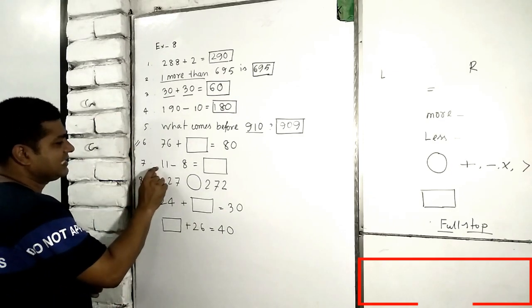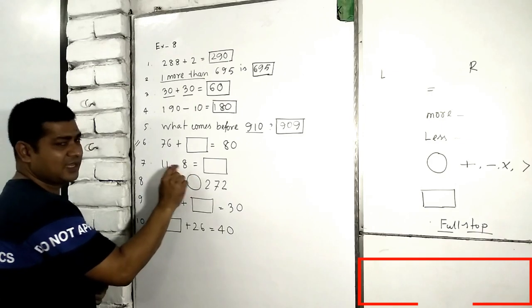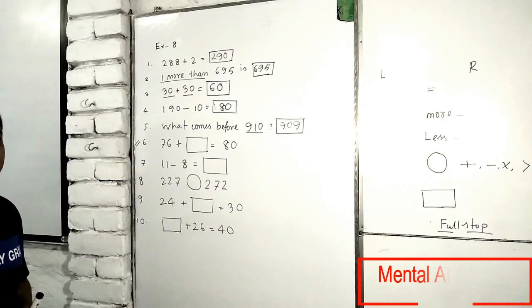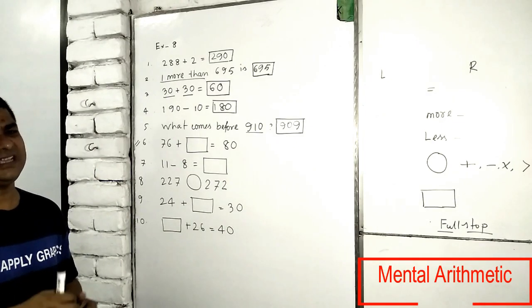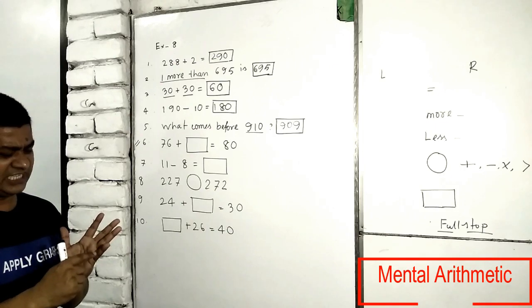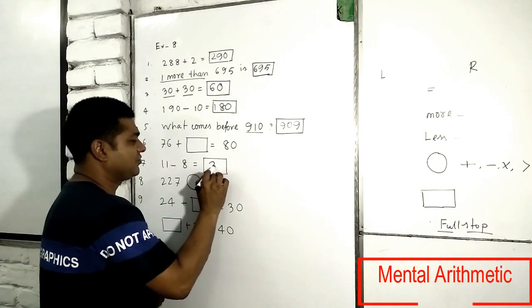And next number is from 11 subtract 8, remaining will be what? Remaining will be 3. Because after 8, if you count 9, 10, 11, you will get only 3.